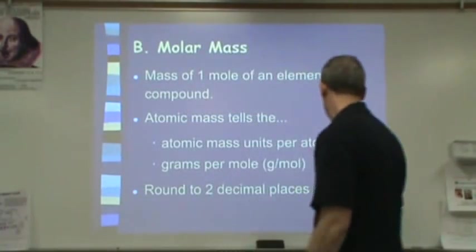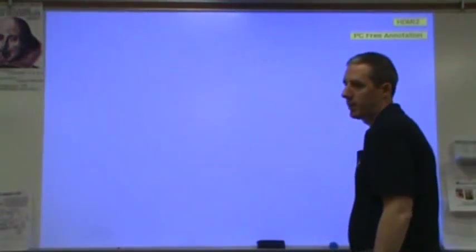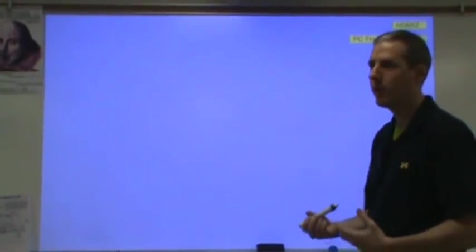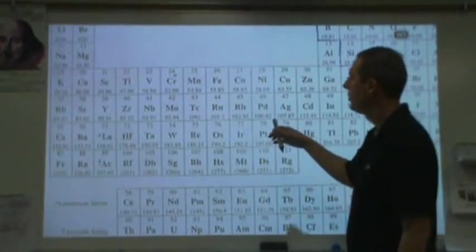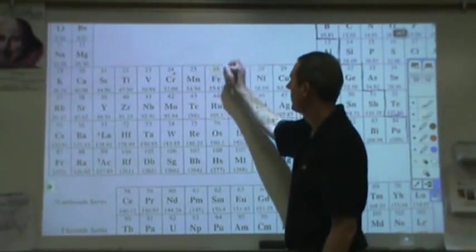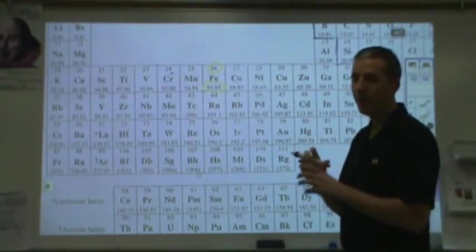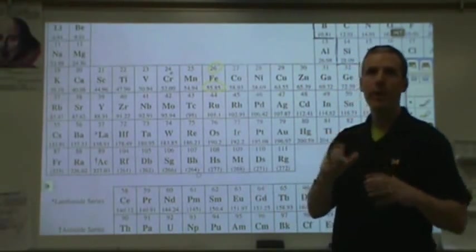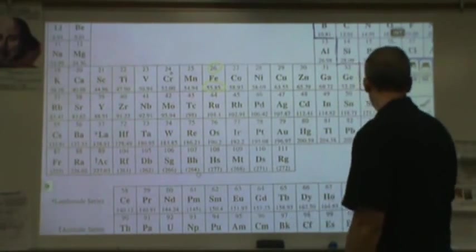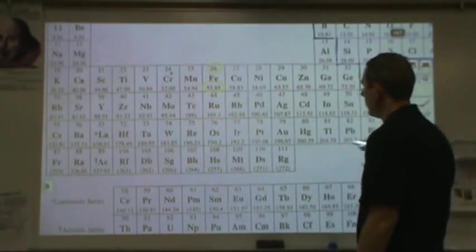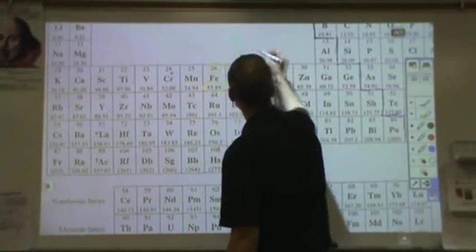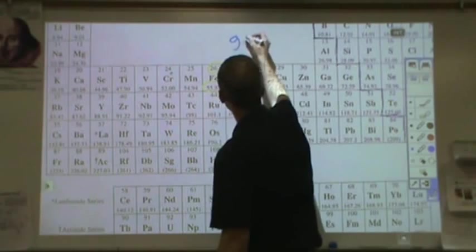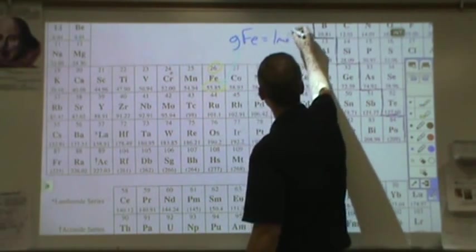Once we've established what that number is, the second important thing to know is that we have already gone through and we have figured out how much mass each element has for a mole of that element. When you look at a periodic table, there are two numbers on there. One, of course, is the atomic number, the other one is this. This number is how many grams you would have if you had one mole of that element, if you had 6.02 times 10 to the 23rd molecules of that.